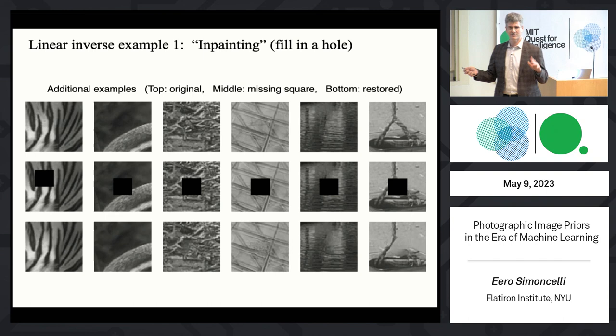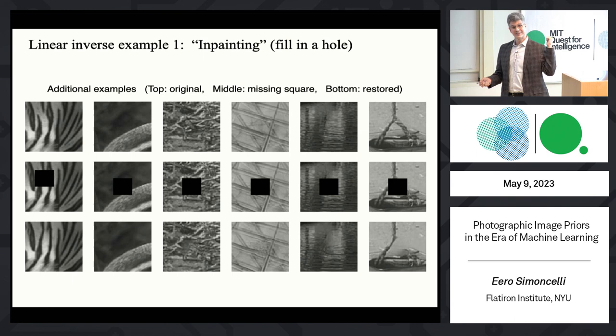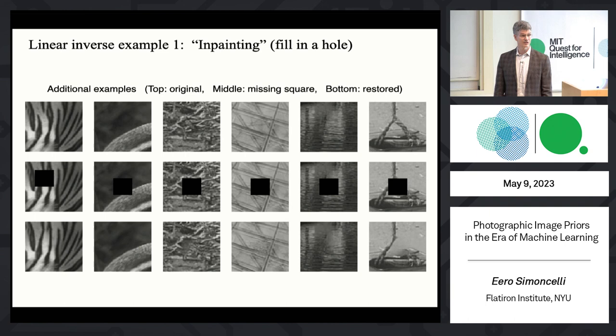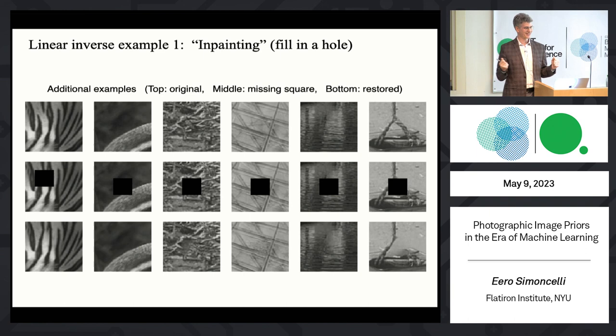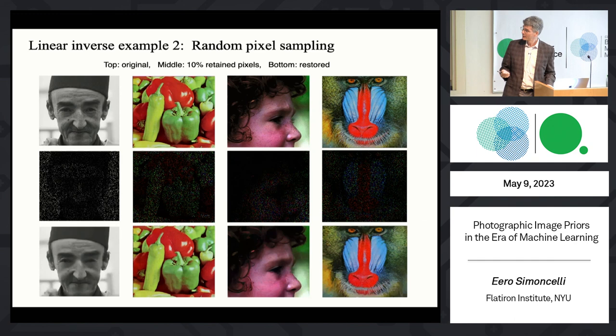It actually works pretty well in all these cases — the top is the original, the middle is the missing square, the bottom is what was reconstructed. And it's worth pointing out: this is the same denoising network for all the examples I'm about to show. We didn't retrain it for each application. It's one denoising network trained once on a big database — we put it aside as our prior engine and reuse it to solve different problems. That was the whole point of the Bayesian paradigm: separate the ingredients and reuse them. You don't have to train a new network for each problem.